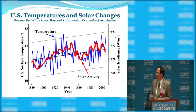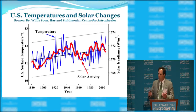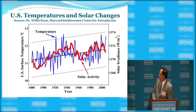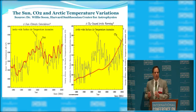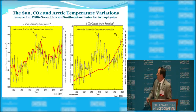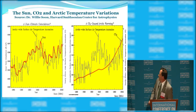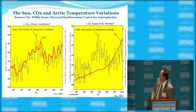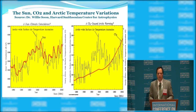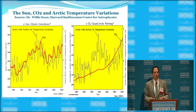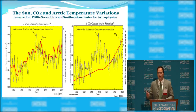Looking more closely at the past 100 years, these next two slides were sent to me by Willie Soon. Willie charted temperature over the United States in blue and solar activity in red going back over the past 100 or so years — again, a very close correlation. Willie then did the same for the Arctic. On the left, solar output in red and temperatures in blue — fantastic correlation. On the far right, instead of solar output, we see carbon dioxide in red. There is little to no correlation between carbon dioxide and temperature. So the sun still is the primary driver, even during the 20th century, even as we're adding carbon dioxide to the atmosphere.